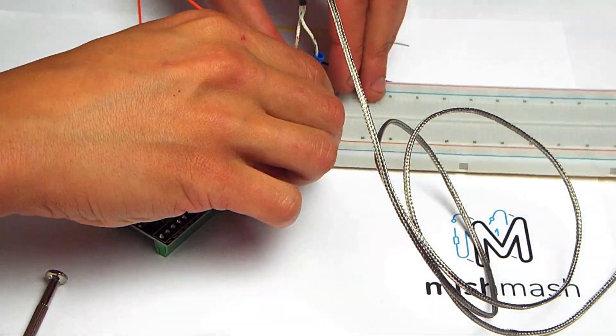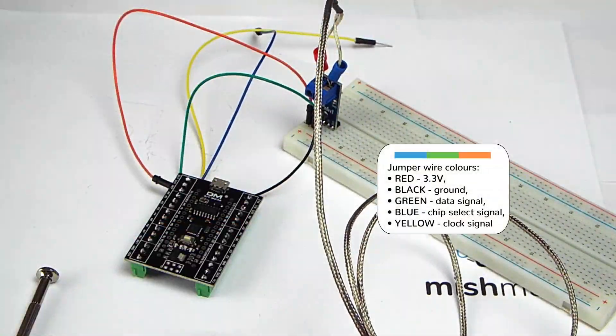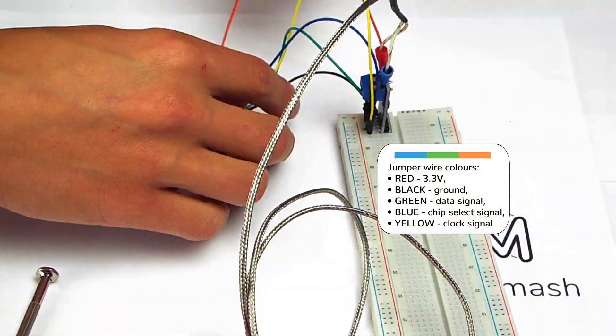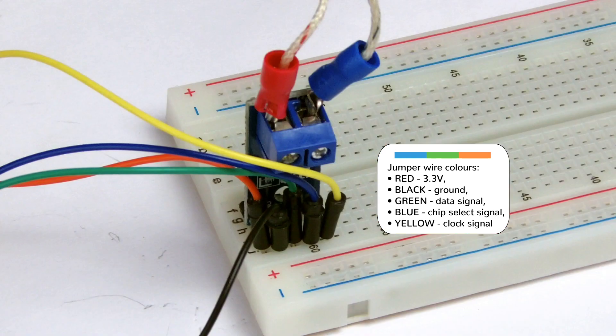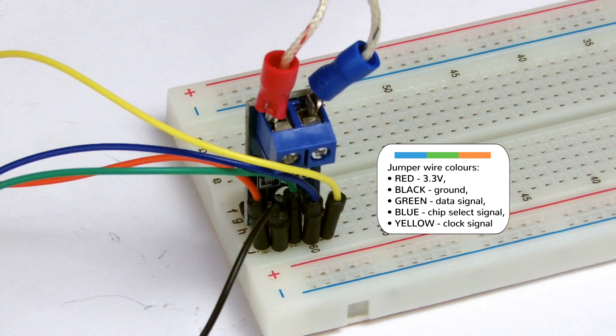Next the other end of these jumper cables are connected to the breakout board. Red for VCC 3.3V, black for ground, green for data output, blue for chip select and yellow for clock.